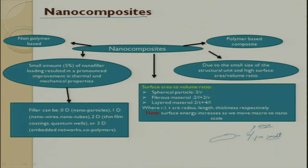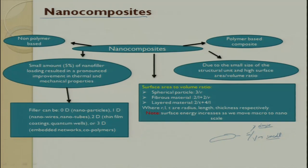Various shapes have different S/V formulas: spherical particles have 3/R, fibrous particles have 2/L + 2/R, and layered matrix has 2/T + 4/L, where R, L, and T represent radius, length, and thickness respectively. Note that surface energy increases as we move from macro to nano. At macro scale, volume increases and gravitational force plays an important role. When going towards nano, the S/V ratio plays a very important role.